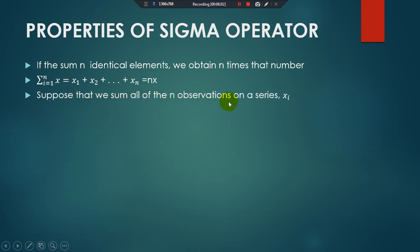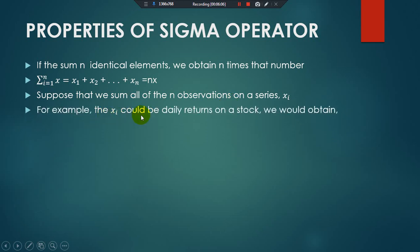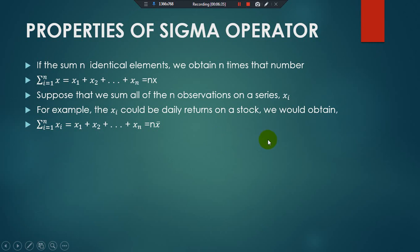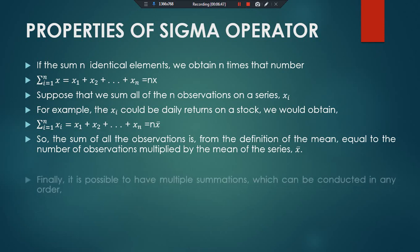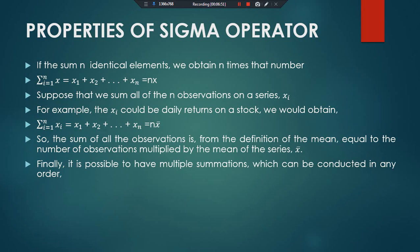Suppose we sum all n observations on a series x_i — for example, x_i could be daily returns on a stock. We would obtain x1 + x2 + ... + x_n. From the definition of the mean, this sum equals n times x-bar, where x-bar represents the mean of the x observations. So the sum of all observations equals the number of observations multiplied by the mean of the series x-bar. Finally, it is possible to have multiple summations.